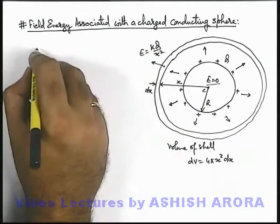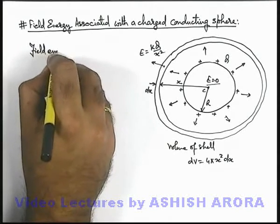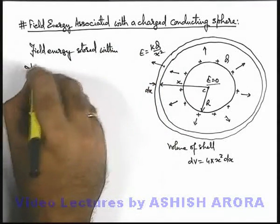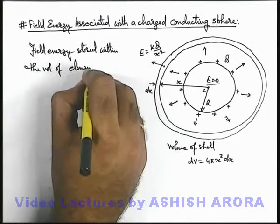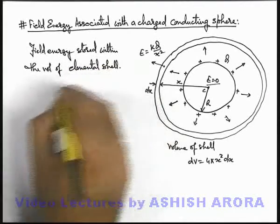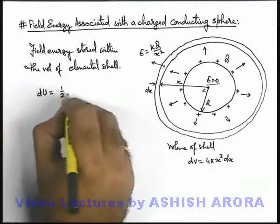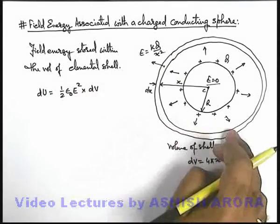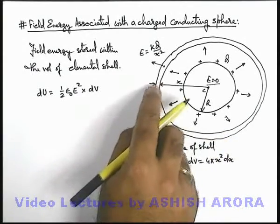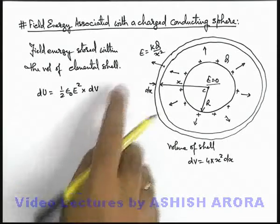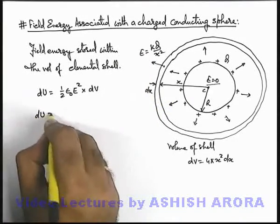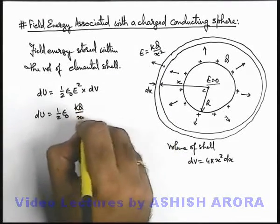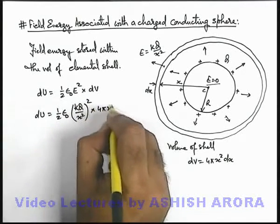Now we calculate the field energy stored within the shell. The volume of the elemental shell gives us the direct expression: dU = ½ε₀E² multiplied by the volume of this shell, which is the field energy density multiplied by the volume. Since dx is small, the electric field remains almost the same within the shell. So dU can be written as ½ε₀ × (kq/x²)² × 4πx²dx.